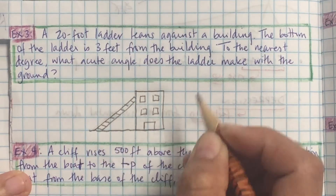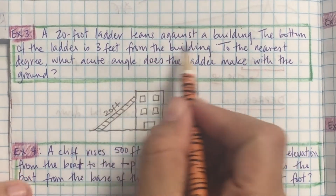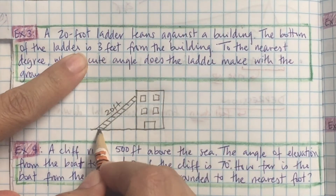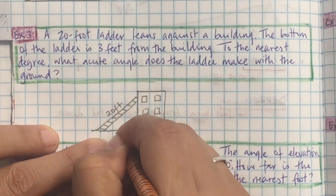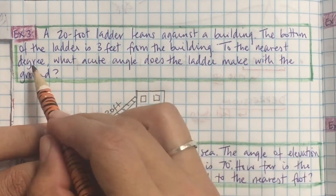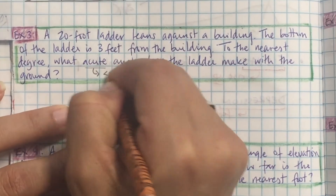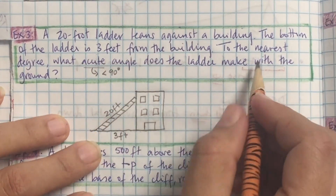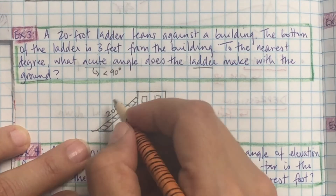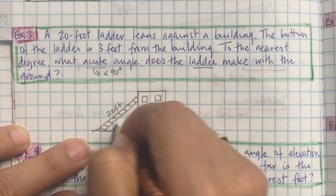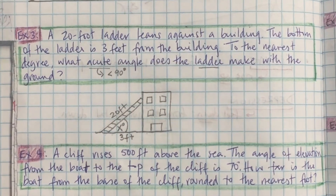The ladder is 20 feet, so I label it 20 feet. The bottom of the ladder is 3 feet from the building, so I label my 3 feet. To the nearest degree, what acute angle does the ladder make with the ground? Acute means less than 90 degrees — you can see it's a small angle. That's my unknown, so I label it X.